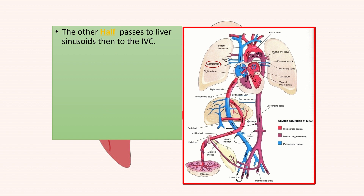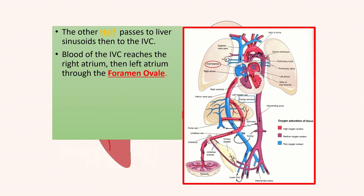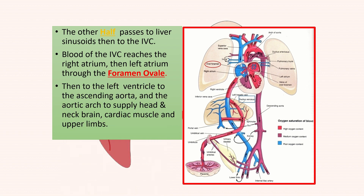There is a defect between the right and the left atrium. The blood of the inferior vena cava reaches the right atrium, then the left atrium through this defect called the foramen ovale, then to the left ventricle, to the ascending aorta and the aortic arch to supply the head and neck, brain, cardiac muscles, and upper limbs.